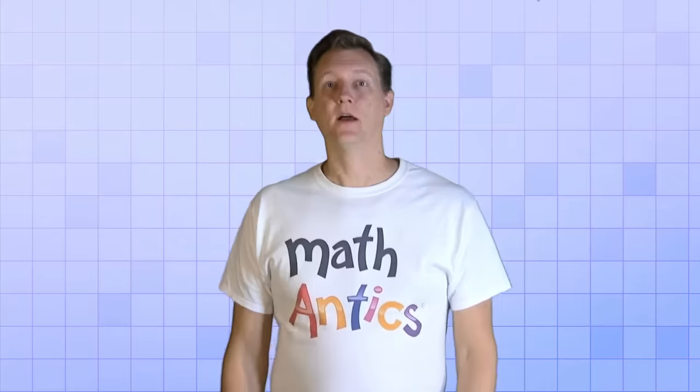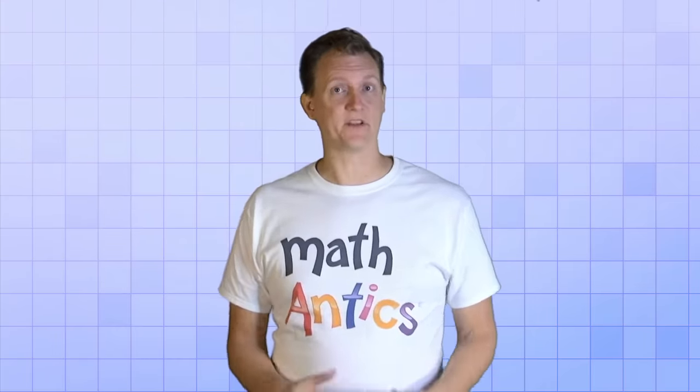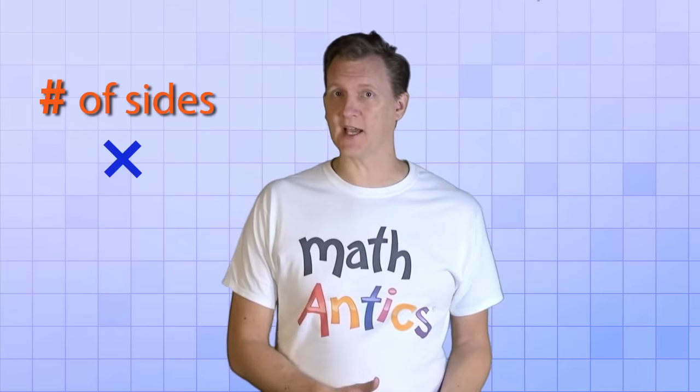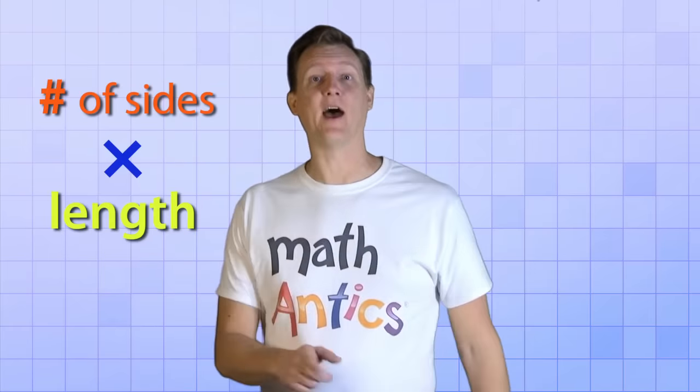And this formula works for any regular polygon, no matter how many sides there are. If the sides are all the same length, you can just multiply the number of sides by the side length and you have the perimeter.